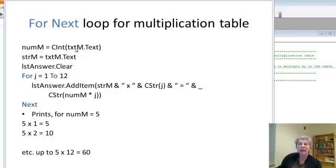I read my element from the text box, get the string version as well, clear out my list box, and then I'm doing this loop for j equal 1 to 12 and I'm adding an item each time.